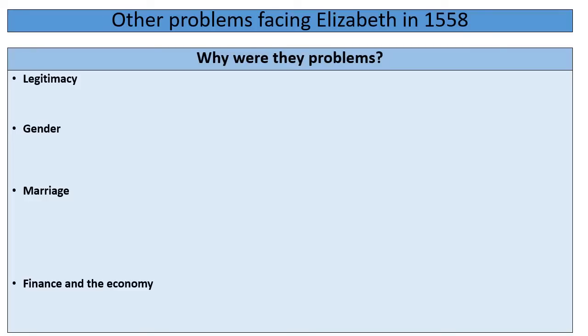Before we look at how Elizabeth starts to solve these problems, we will look at the last four problems she faces. I've given you four headings: legitimacy, gender, marriage, and finance and the economy. Pause the video and jot down why these four issues were problems for Elizabeth in 1558, then replay the video once you think you've got some answers.